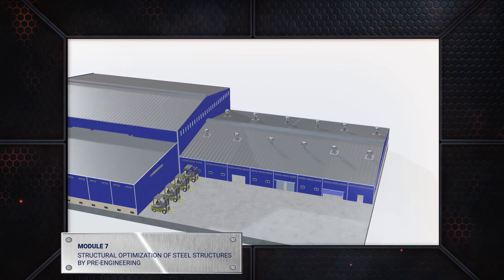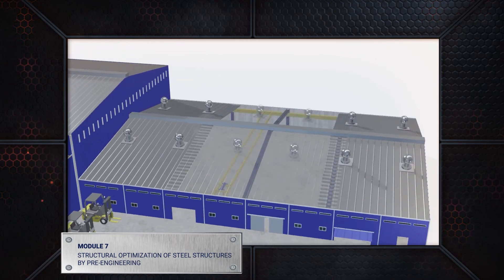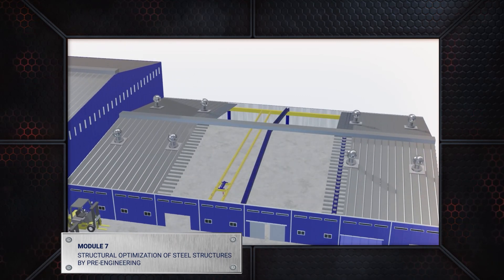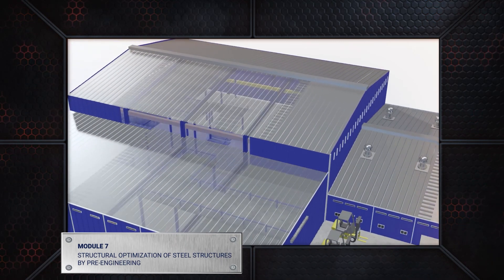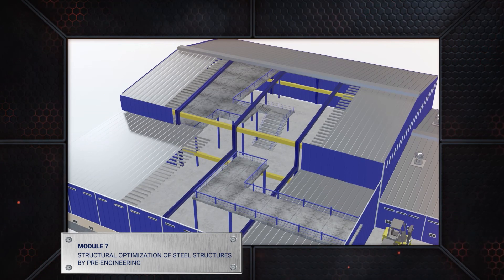In module 7, you will learn about the design and construction of pre-engineered steel buildings using the globally acclaimed MBMA and AISC codes.